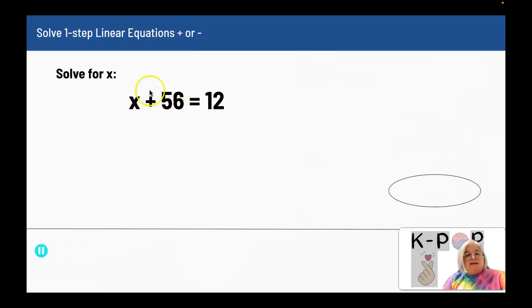It is on the left-hand side, so I'm looking at what's happening to that variable on the left-hand side. I'm adding 56.